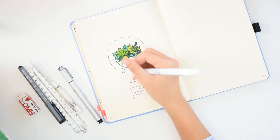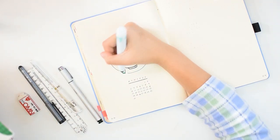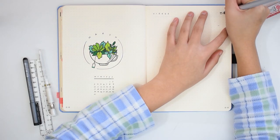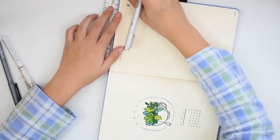Now I'm using a grey mild liner to add in some shadows onto the cup. And now, after fixing the brightness, I'm moving on to the right side of the spread.